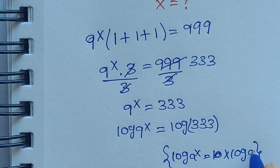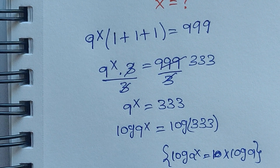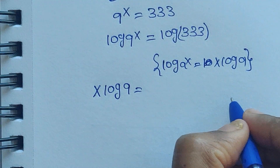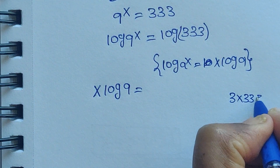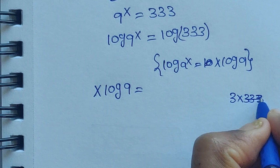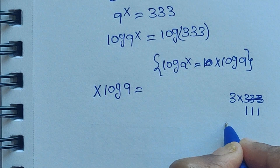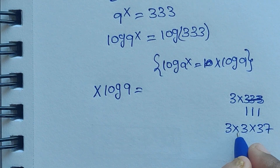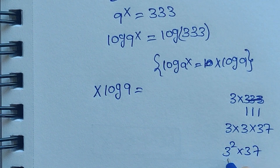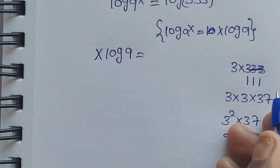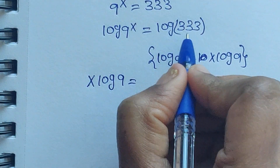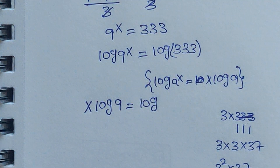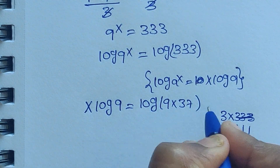So x log 9 equals log 333. Now we can write 333 as 3 times 111, and 111 equals 3 times 37, so 333 equals 3 times 3 times 37, which is 3 squared times 37, and 3 squared equals 9. So 333 equals 9 times 37. We substitute this, writing log of 9 times 37.